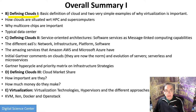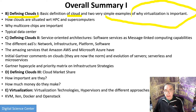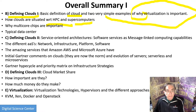Section B defines the cloud initially and gives you a couple of examples of virtualization. It discusses high performance computing and supercomputers and why they're either the same or different from clouds. It discusses why multicore has had such a big impact on the field, and it describes typical data centers.